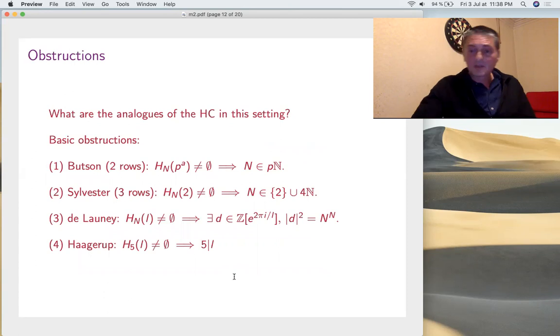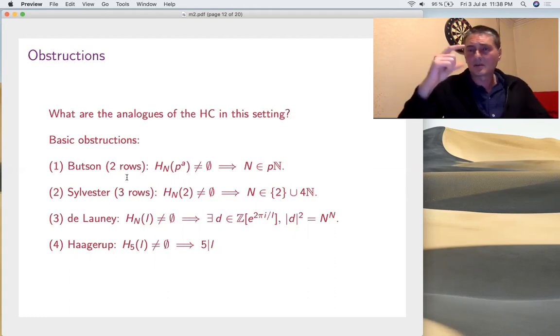Now, Butson is very interesting, because H_N of 2, I reminded you, these are the Hadamard matrices, and so you have the Hadamard conjecture HC, also the circulant one. So, what are the analogues of HC and CHC in this setting? And the problem is that there are many obstructions, actually. We have the Butson obstruction coming from just the orthogonality of 2 rows. For a prime power, N must be a multiple of 8.